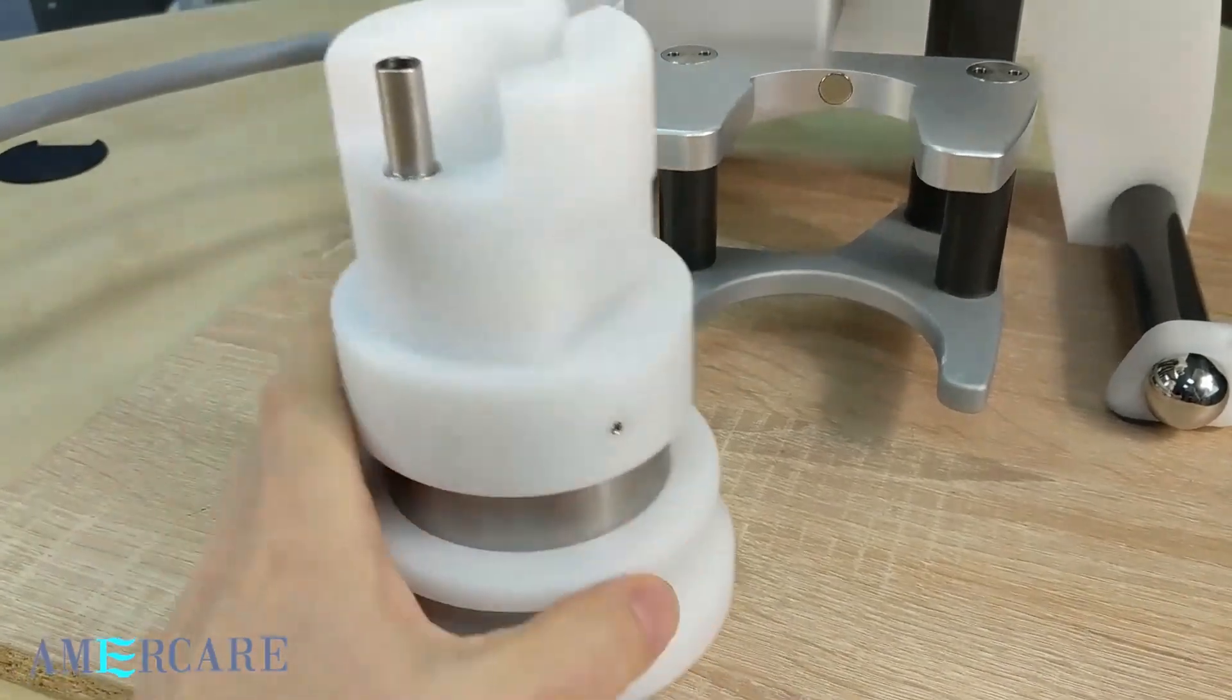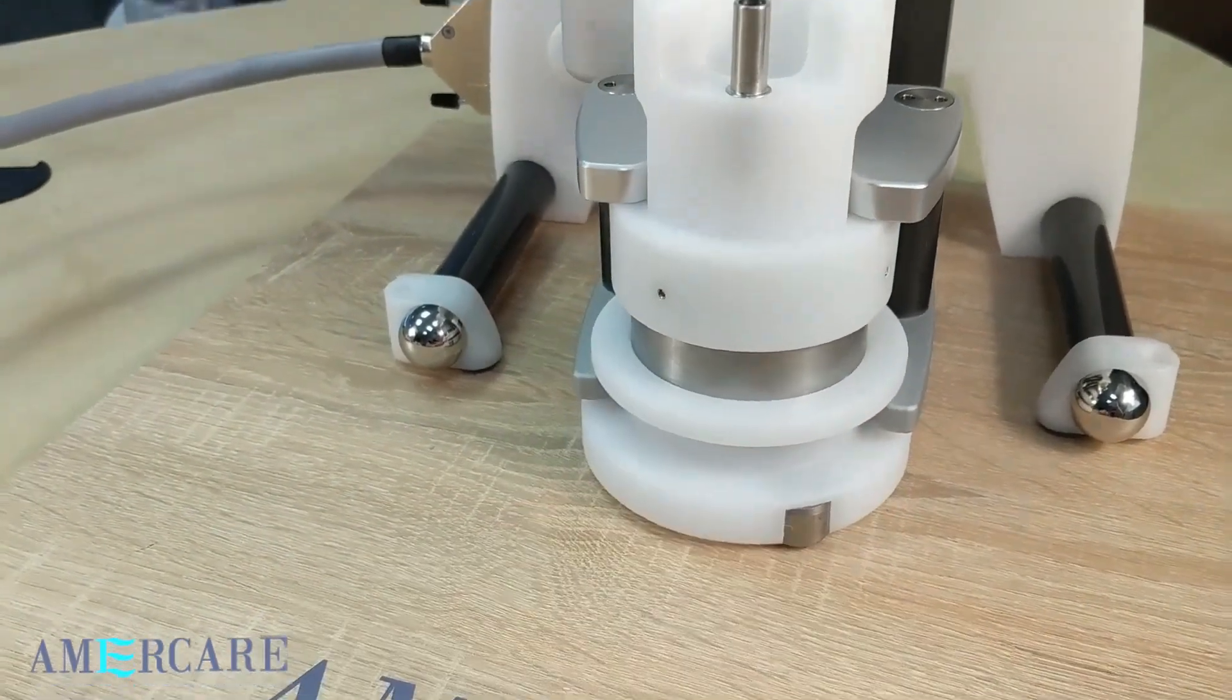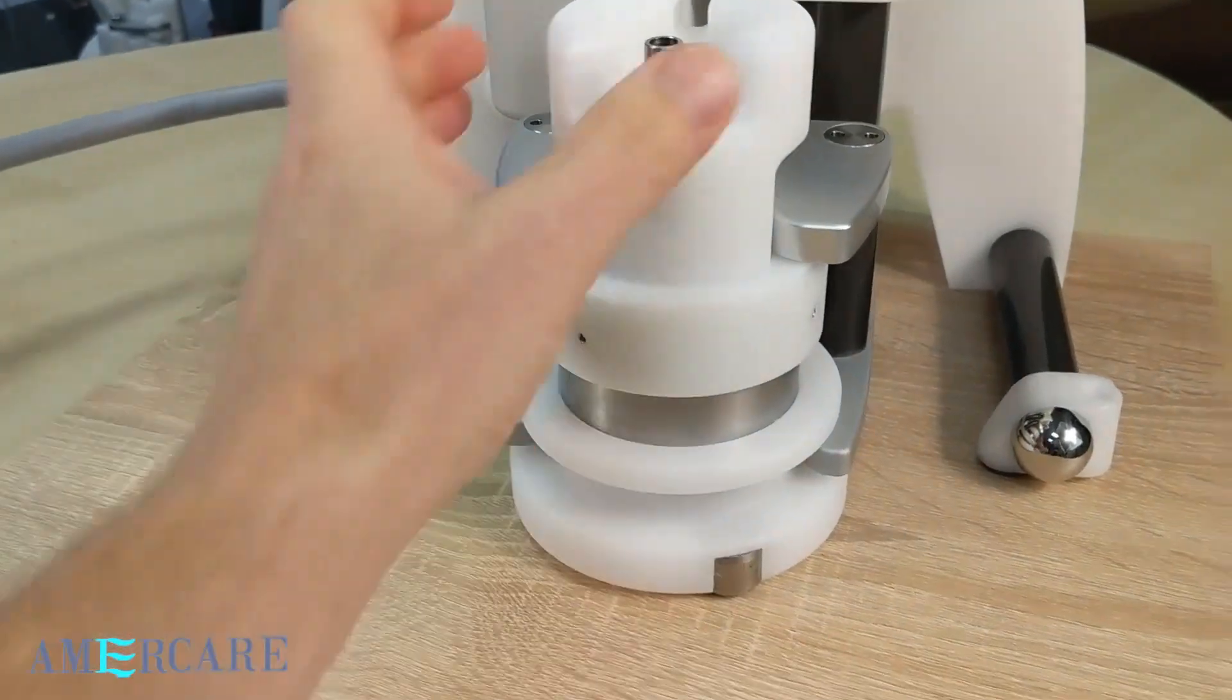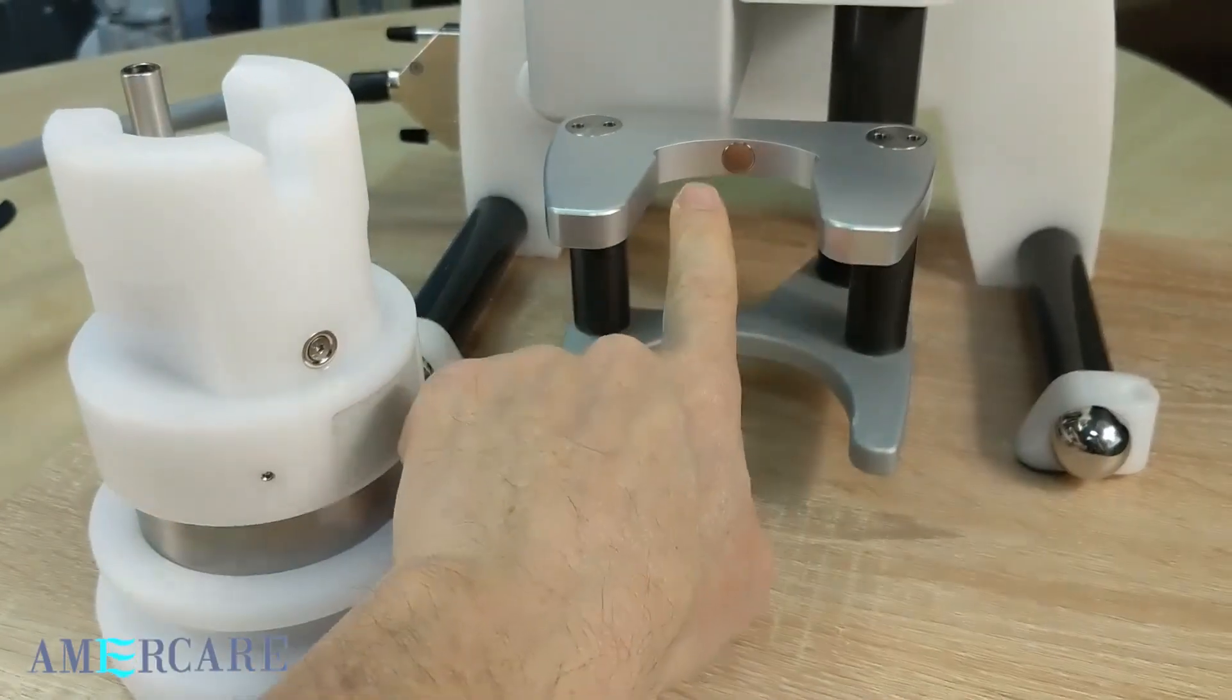So if correctly aligned, the vial shield should, with very little effort, load into the jaws. It is lightly held into position with two magnets, one on the vial shield and one on the jaws.